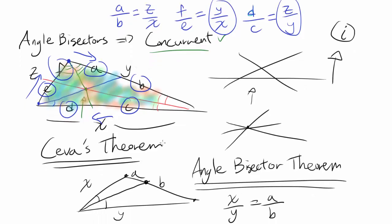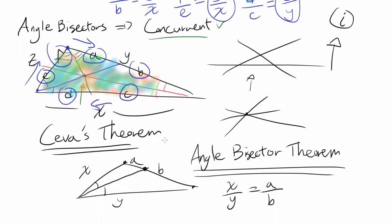And that's telling you by Ceva's theorem that angle bisectors are concurrent. So we are done.